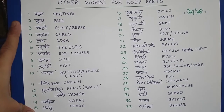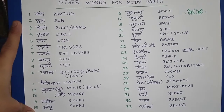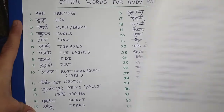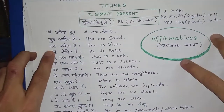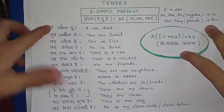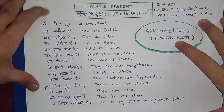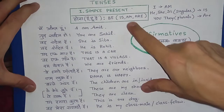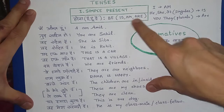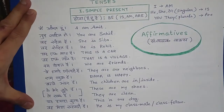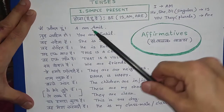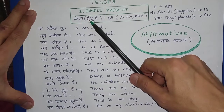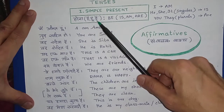Now the second topic: we are starting with tenses, and first of all, simple tense. Simple present tense — jisme sirf hona ka kaam hota hai — jisme last mein aisi baat aati hai: hoon, hai, ya hain.